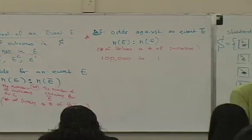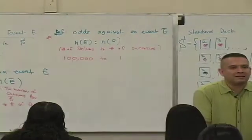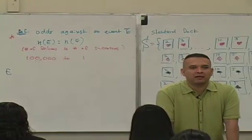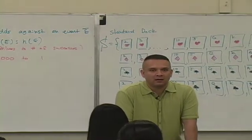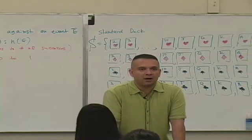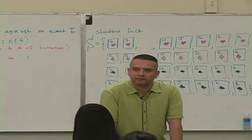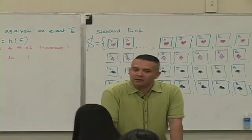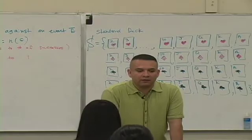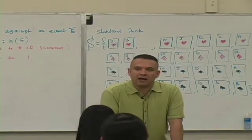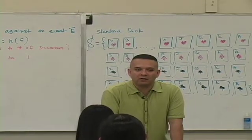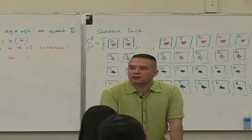Can you guys tell me, after I just gave you the definition of odds against, if they say the odds against winning is 100,000 to 1, what does that mean? Well, what does it mean? There's 100,000 what? Failures to every 1 success.